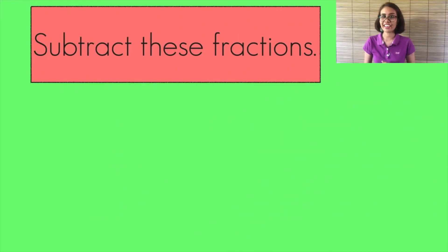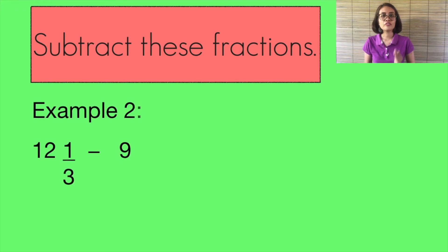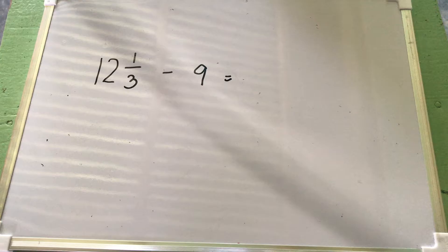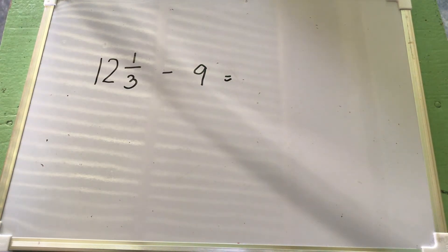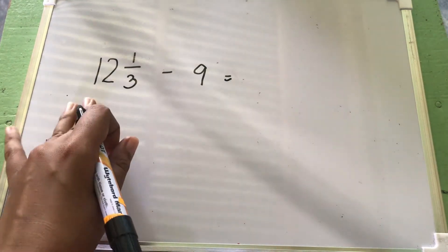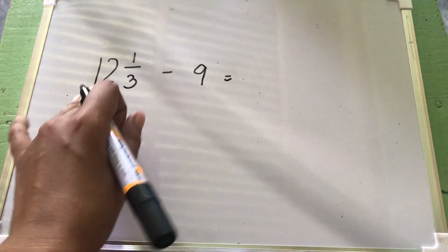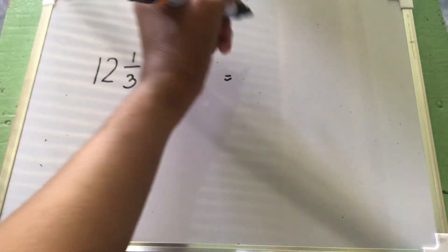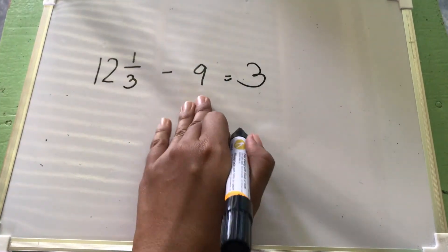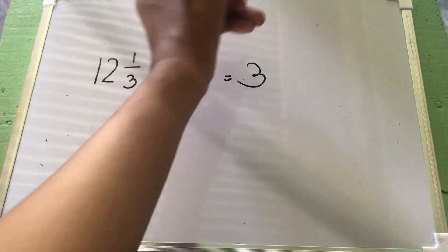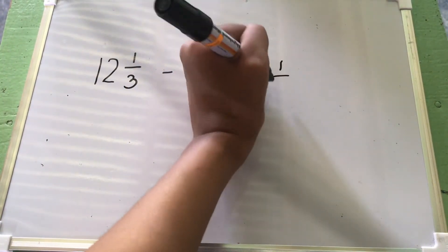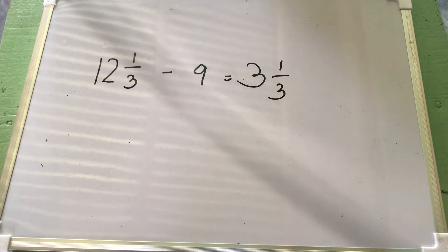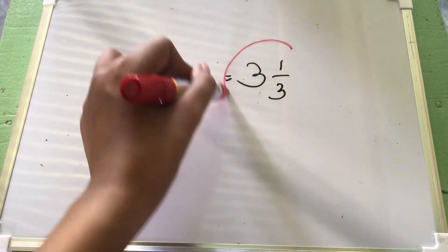It's easy, right? Now let's continue. Second example: mixed number minus whole number. Let's have 12 and 1 third minus 9. We just need to subtract the whole numbers: 12 minus 9 equals 3. Since this is a whole number, there's no fraction, so you just copy the fraction 1 third. It is already in its lowest form, so the final answer is 3 and 1 third.